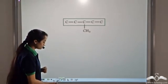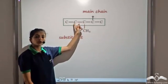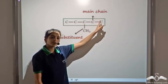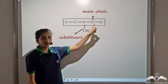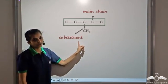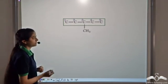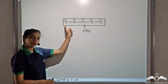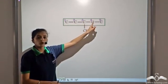The carbon atoms belonging to the longest chain are known as main chain carbon atoms. The group attached outside the main chain is known as a substituent. Now let's number the carbon atoms. If we number from the left, we get 1, 2, 3, 4, 5.